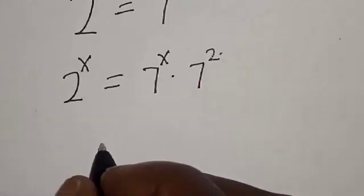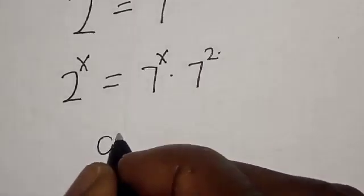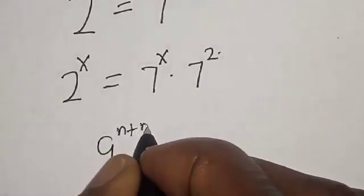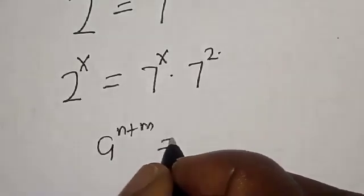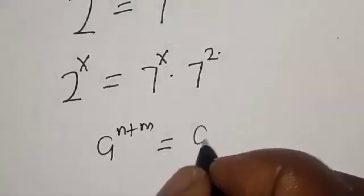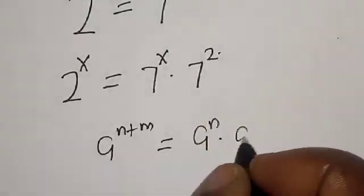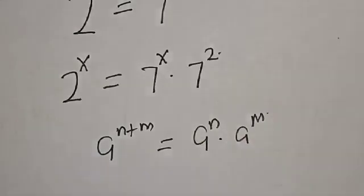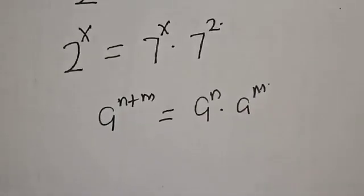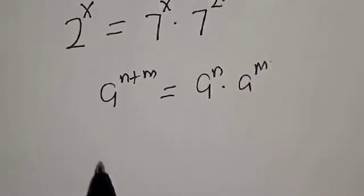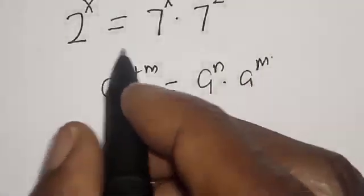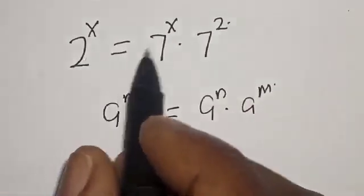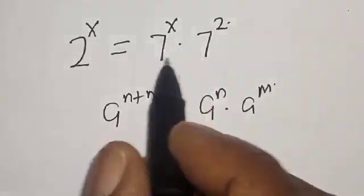That is, if you have 8 raised to power n plus m, it's the same thing as 8 raised to power n multiplied by 8 raised to power m. Now, we have 2 raised to power s here and 7 raised to power s here.